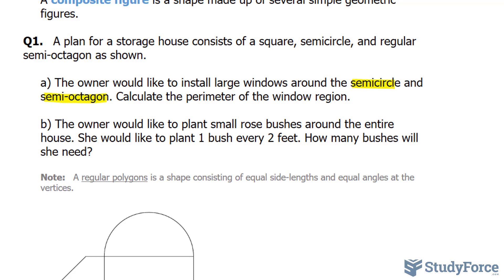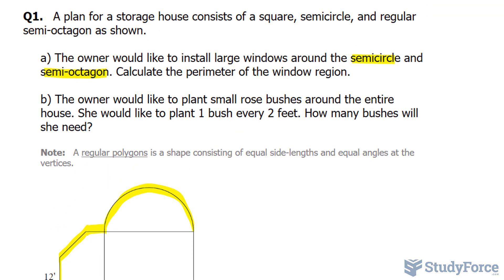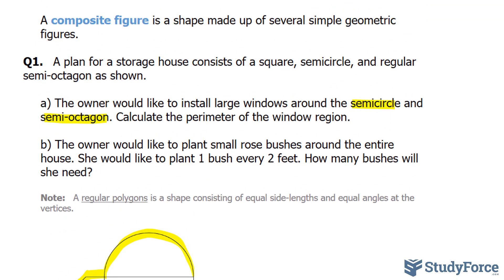Let's begin by outlining where the semicircle and semi-octagon is. That's the semicircle, and the window is planned to be around this and around the semi-octagon. We're also told that this is a regular octagon, and when we're told that it's a regular shape, that means all of the sides and all of the angles within the shape are equal.